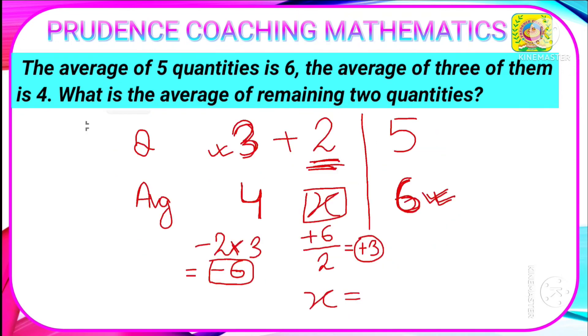So here the average of this 2 quantities will be 6, that is the average of this 5, plus 3. The answer will be 9.